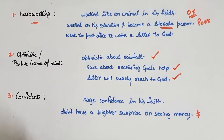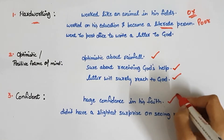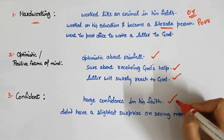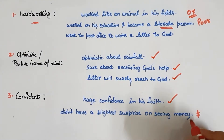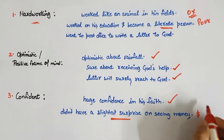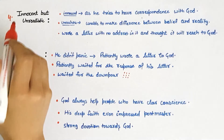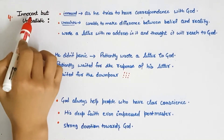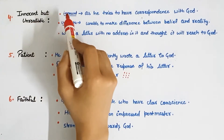Next is confident — how was Lencho a confident person? He had huge confidence in his faith in God. We can see this because he didn't have even the slightest surprise on seeing money in the envelope. When he found 70 pesos in the envelope, he showed no surprise at all about where the money came from. This shows how enormously confident he was.